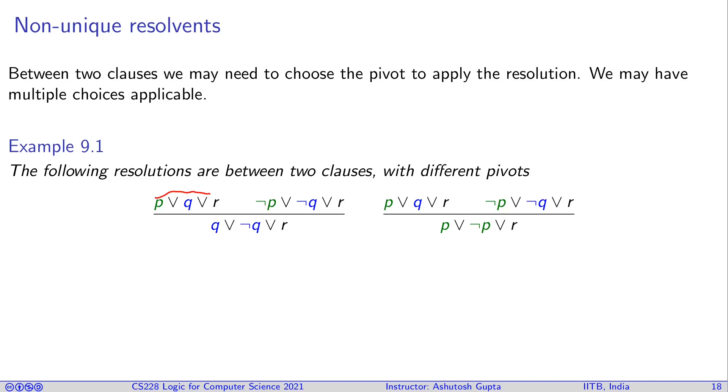Consider this clause p or q or r and not p or not q or r. You can resolve on variable p and you get this clause, or resolve on q between the same two clauses and you obtain p or not p or r. So you have to make a choice.